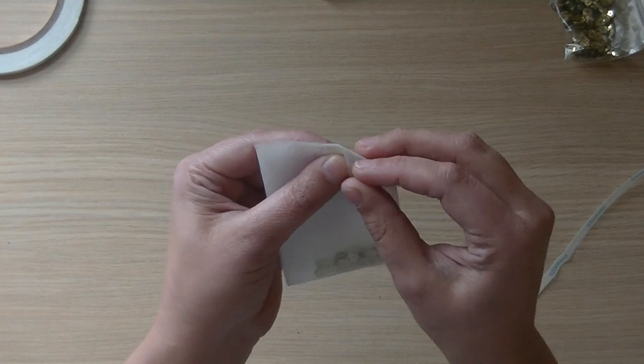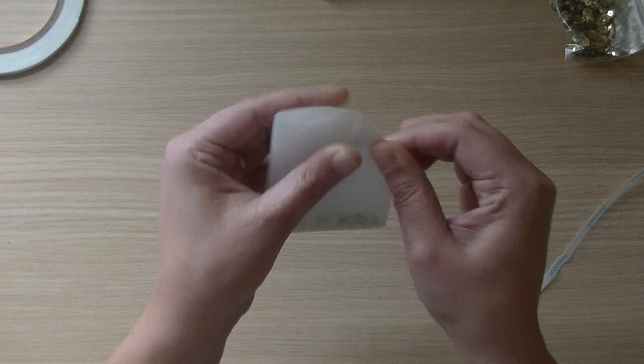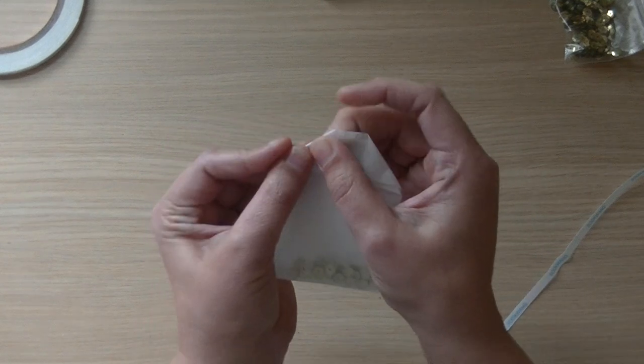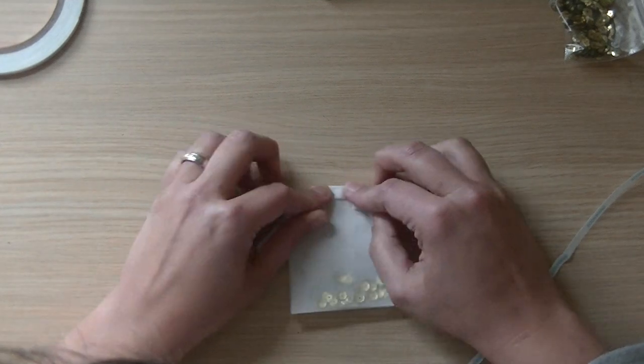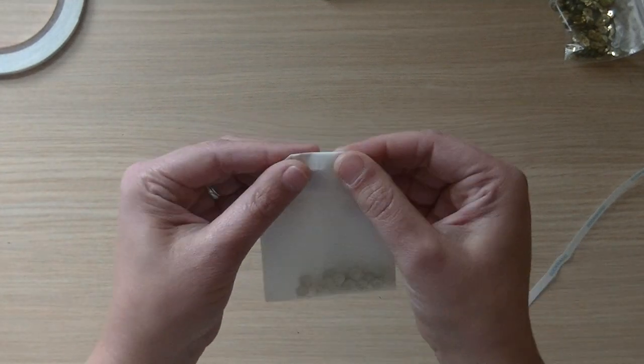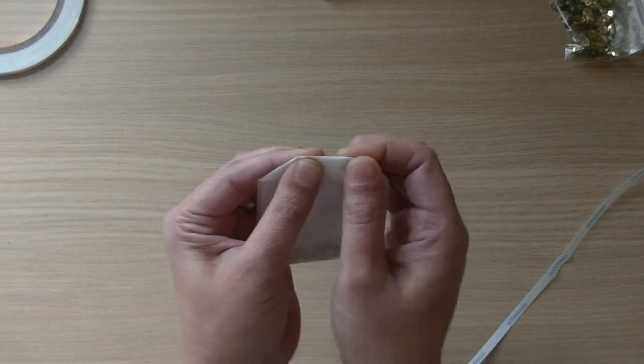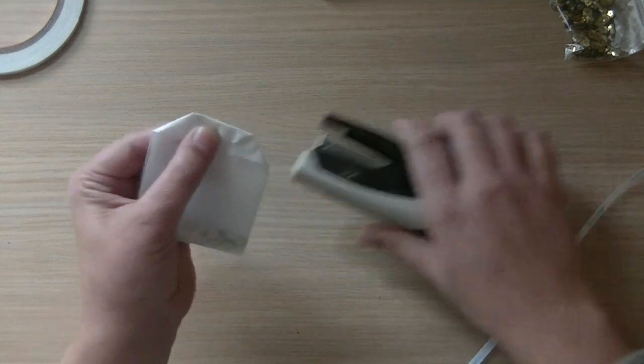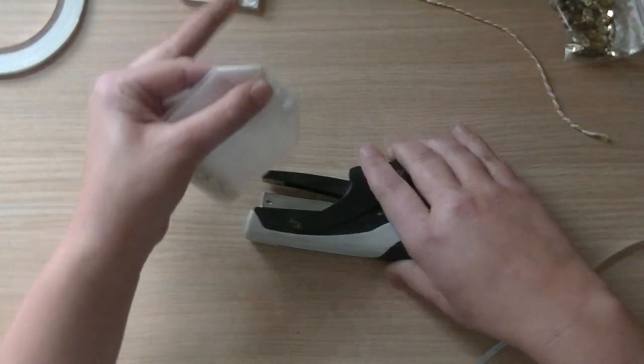And then you fold it over on those corners that I made into the dies, like this, and then you're left with an even larger tea bag. I will show you the difference between them in a few seconds because I need to fold it over. Then you make a fold like this. That's the only fold you have to make yourself.